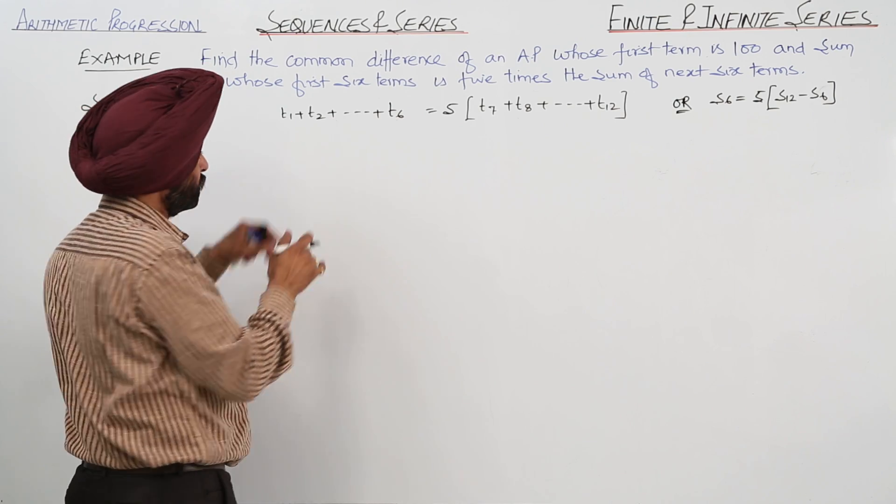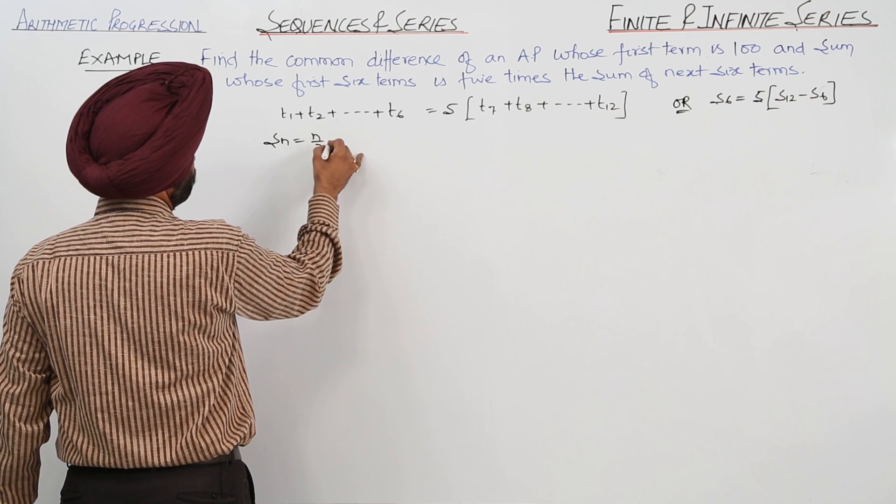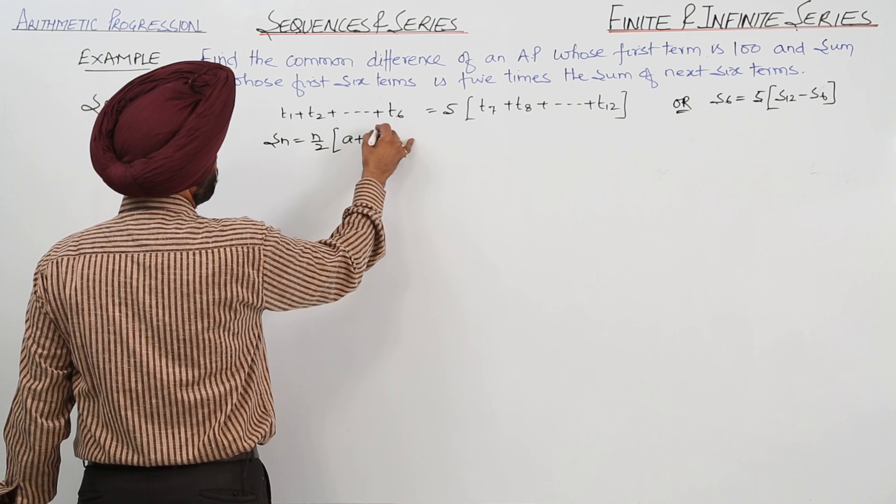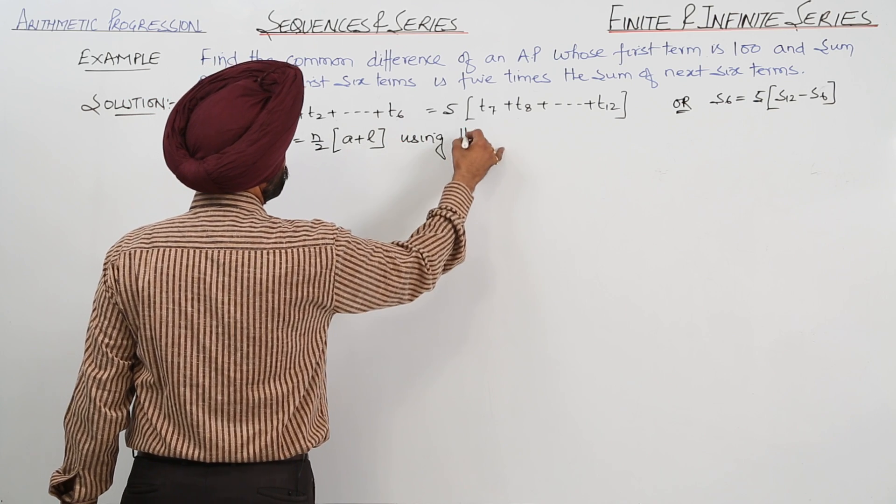So now what we are having? S6, sum of the formula, what we are writing now: Sn is equal to N upon 2, A plus L. Now using this...